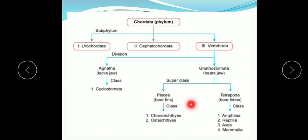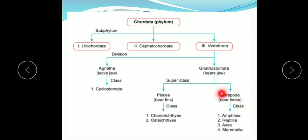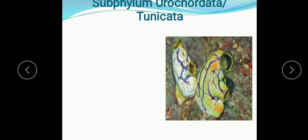Gnathostomata is further divided into two super classes: Pisces (all fishes come under Pisces) and Tetrapoda. 'Tetra' means four and 'poda' means limbs, so they have four limbs. Tetrapoda is further divided into four classes: Amphibia, Reptilia, Aves, and Mammalia. Pisces is further divided into two classes: Chondrichthyes (cartilaginous fishes) and Osteichthyes (bony fishes). Let me now study all these phyla and classes in detail.